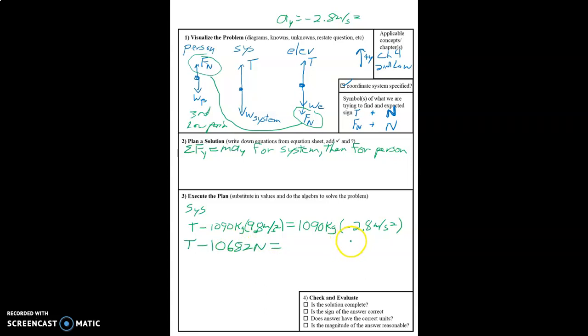And then on the other side, 1,090 times negative 2.8 is negative 3,052.